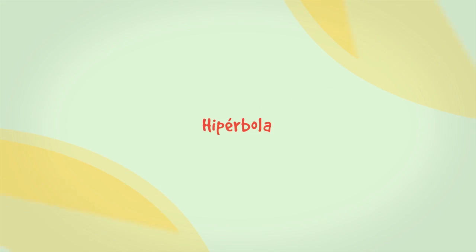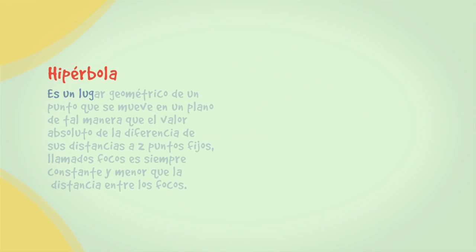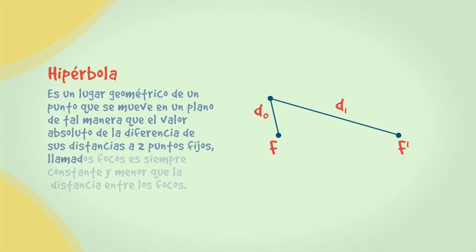La hipérbola es un lugar geométrico de un punto que se mueve en un plano de tal manera que el valor absoluto de la diferencia de sus distancias a dos puntos fijos llamados focos es siempre constante y menor que la distancia entre los focos.